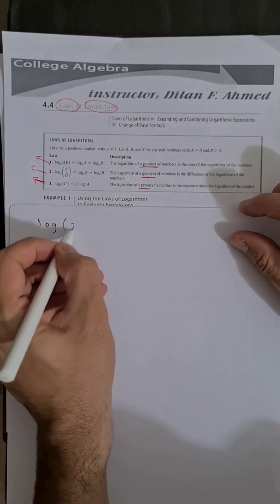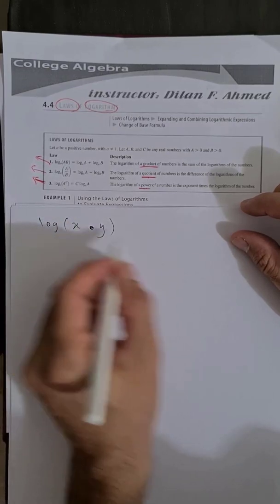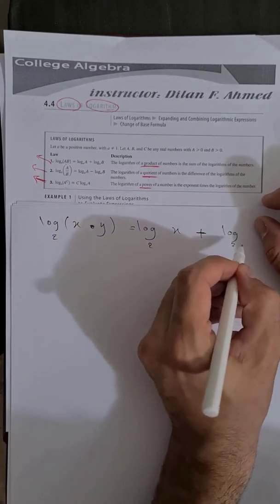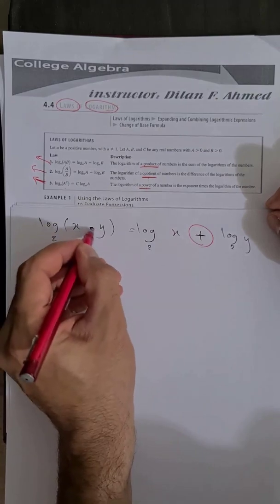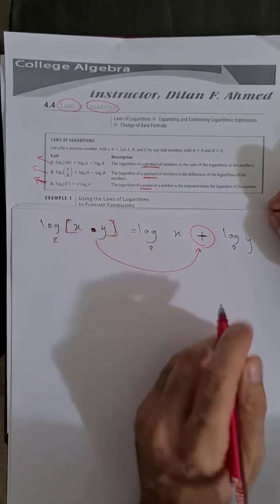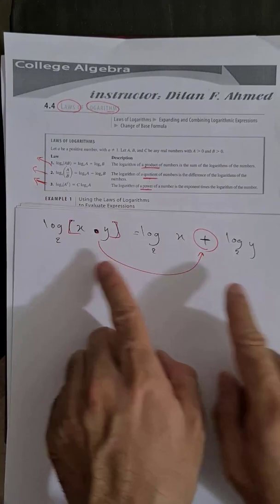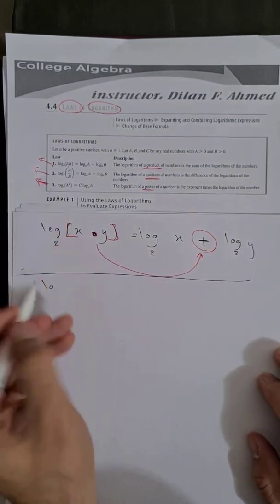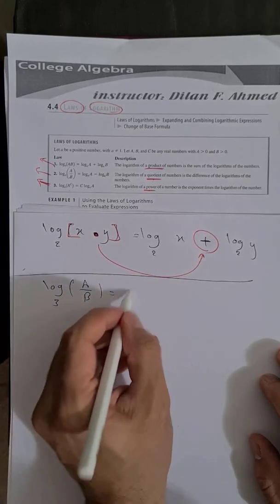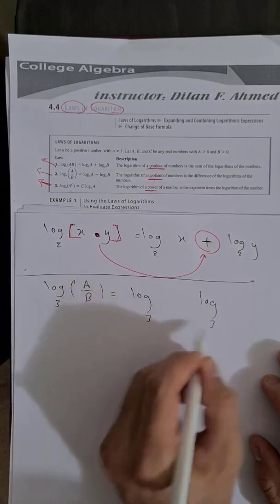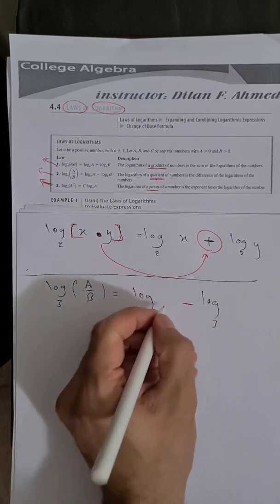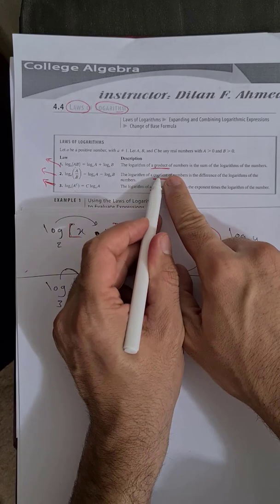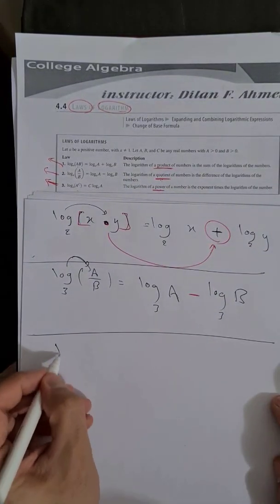For example, on page 123, if we have log of x multiplied by y, we can say directly, for any base - for example base two - it equals log₂(x) plus log₂(y). So if we have a bracket with multiplication, we change it to addition and distribute the logarithm. If we have log of a over b, we change the division into subtraction: log(a) minus log(b). That's the product rule and quotient rule.